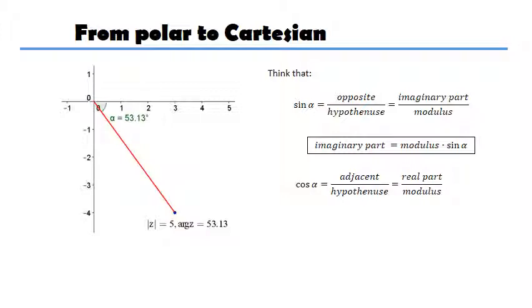So the imaginary part is equal to the modulus times the sine of alpha. And the cosine of the angle is going to be the adjacent divided by the hypotenuse. So the real part is going to be the modulus times the cosine of alpha. You see, I'm just taking this thing on the other side, multiplying. Just taking this thing on the other side, multiplying.